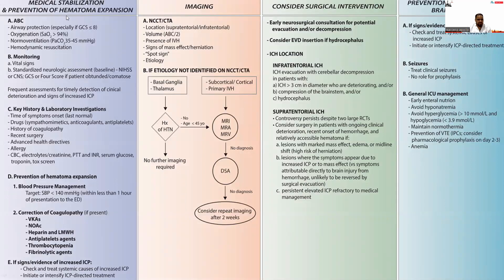In summary: medical stabilization and prevention of hematoma expansion — follow ABCs, monitor vitals and provide standardized neurological care, obtain key history and laboratory investigations. Prevent hematoma expansion by reducing blood pressure, correcting coagulopathy, stopping anticoagulation, and reducing ICP. Imaging with non-contrast CT and CT angiography should be performed; if etiology is not identified, MRI or digital subtraction angiography is helpful and should be repeated at two weeks if no diagnosis. Neurosurgical involvement should be considered for hematoma evacuation, decompression, EVD insertion for hydrocephalus, and prevention of secondary ICP elevation. Treat seizures only when clinically present. General ICU management includes early enteral nutrition, avoiding hyperthermia and hypoglycemia, maintaining normothermia, and DVT prophylaxis. Thank you.